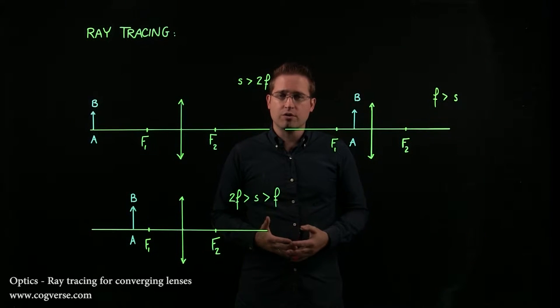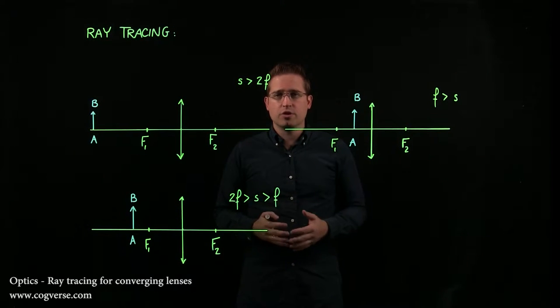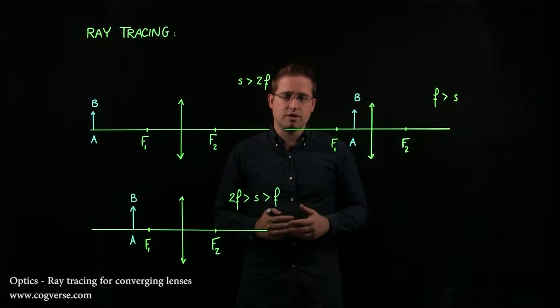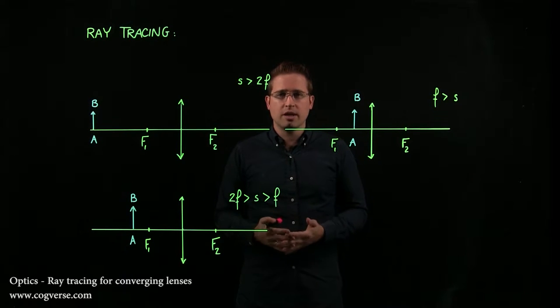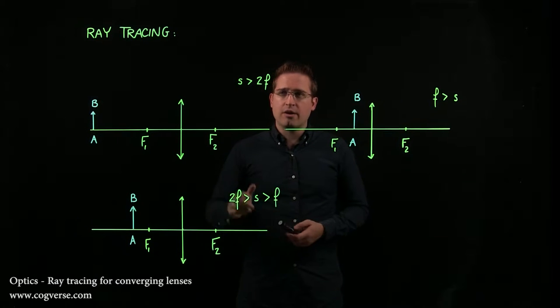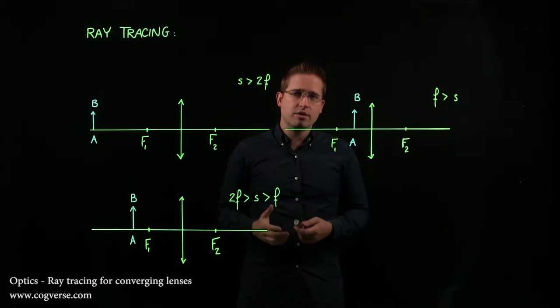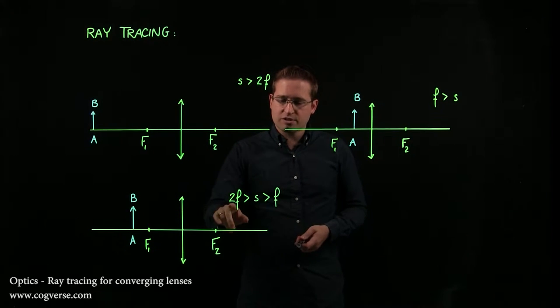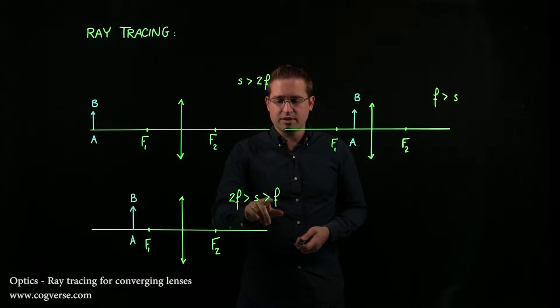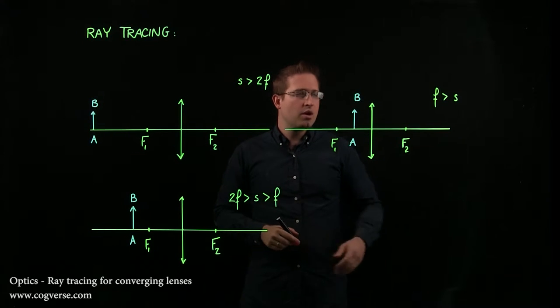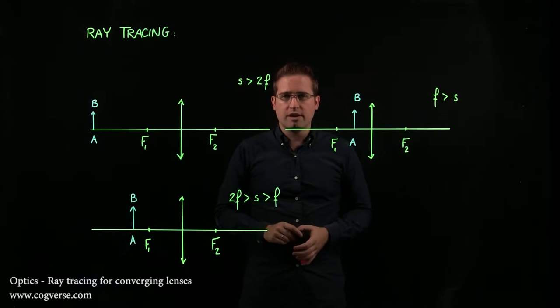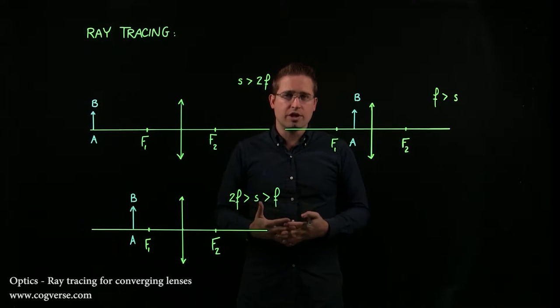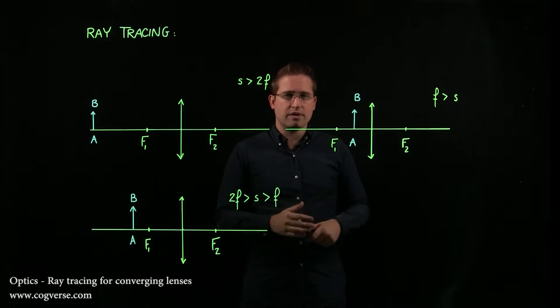Let's go over the ray tracing rules for converging lenses. When it comes to a converging lens, there are three cases you need to know and for which you need to be able to do ray tracing. Either the object distance is greater than two focal lengths, or it's smaller than 2f but still greater than f, or it's smaller than f. We're going to go over the ray tracing rules for each one of these cases.